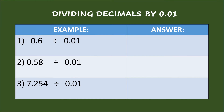Dividing decimals by one-hundredth. First example: six-tenths divided by one-hundredth. Take note that the divisor has two decimal places, so move the decimal point of the dividend two places to the right, annex a zero in the vacant place, and put the decimal point afterwards. So the answer is sixty.